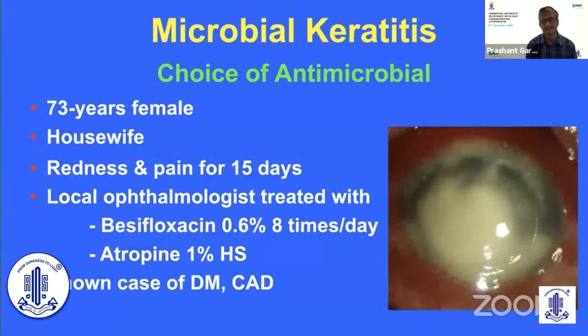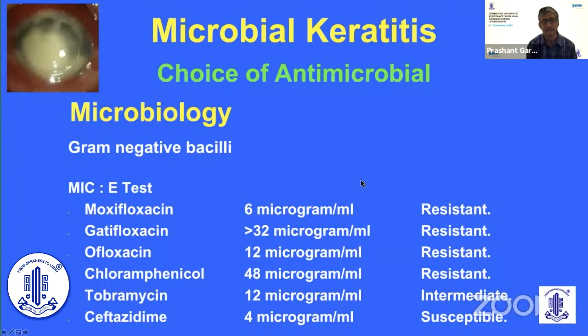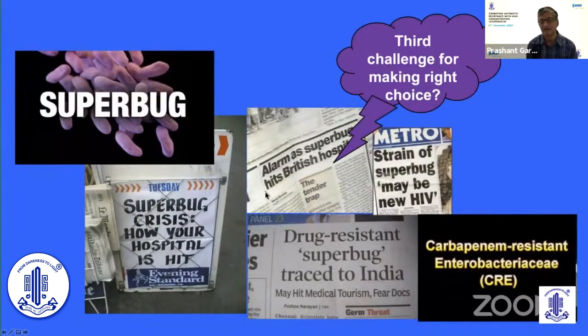There is another case — a 73-year-old female who presented with a history of 15 days duration. She was treated with besifloxacin 0.6% eight times per day, but despite this medical treatment her condition deteriorated and she developed a limbus-to-limbus infiltrate. Her microbiology revealed gram-negative bacilli, and the growth was identified as Pseudomonas aeruginosa, which was resistant to practically all classes of antibiotics except ceftazidime.